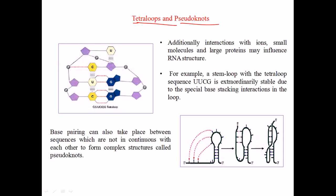As you can see in this picture, interactions with ions, small molecules, and large proteins may influence these structures. For example, a stem loop with the tetraloop sequence UUCG is extraordinarily stable due to the spatial base stacking interactions. Tetraloops is nothing but a stem loop structure, which we can find in the previous picture.